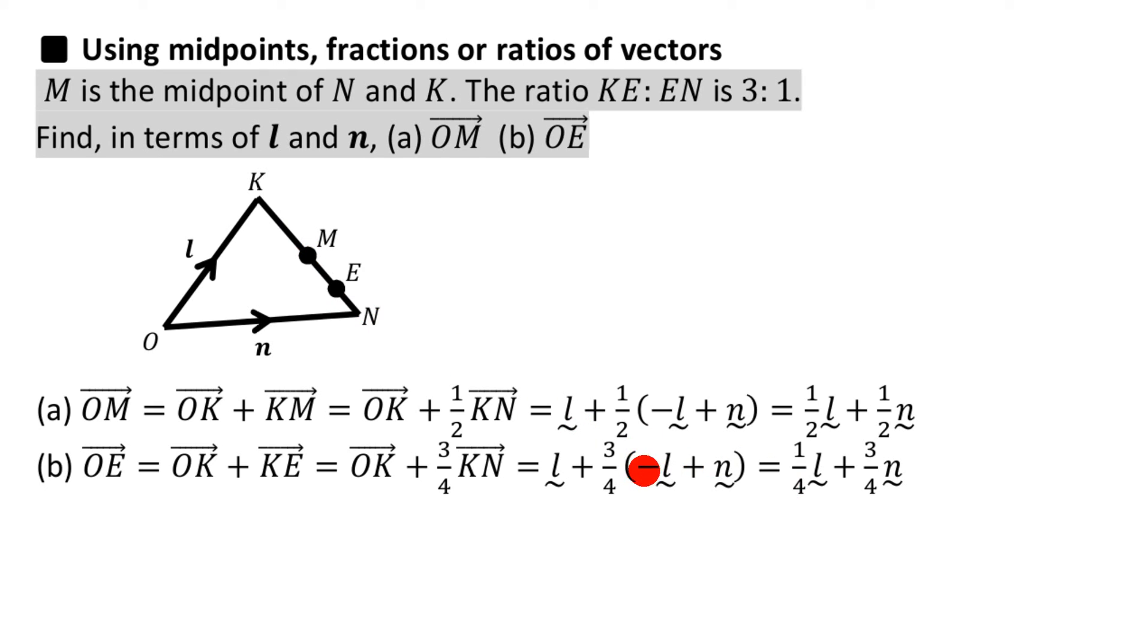K to N, like we said before, is minus L plus N. And K to E is 3 quarters of that. So I'll write 3 quarters outside the bracket. Like before, I simplify this stuff.